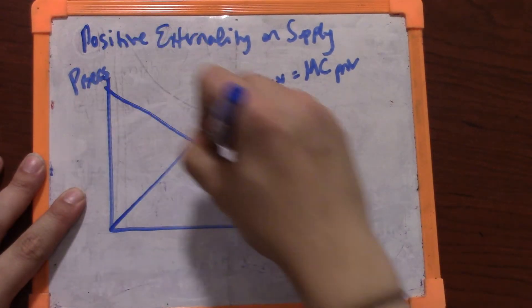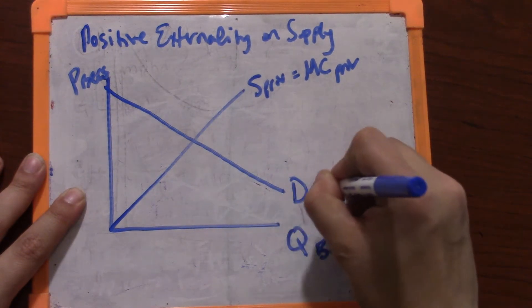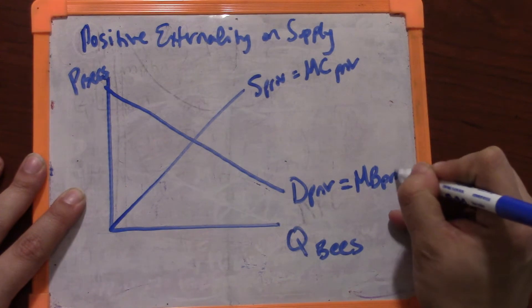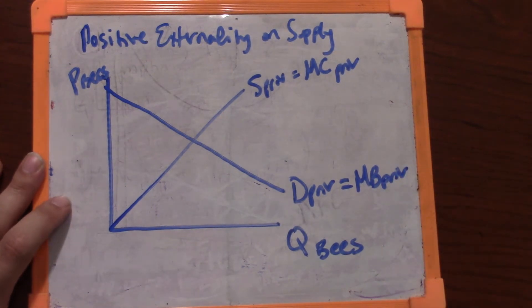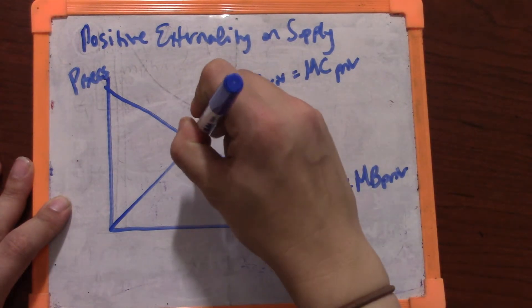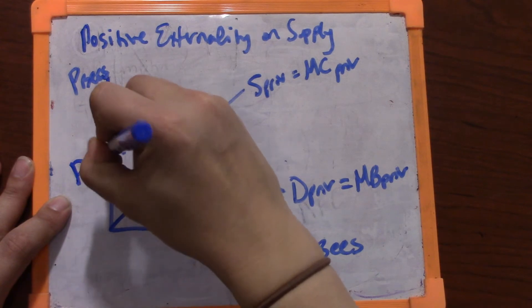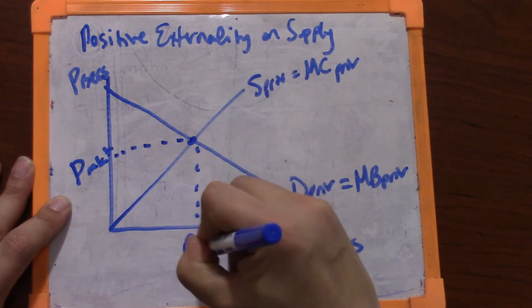Those are borne by the person supplying the bees. They are accounted for in the market. Then there is a market or private demand for bees, which is given by the marginal benefits to private individuals. So whoever is buying the bees in this market will have a demand curve that comes from their private marginal benefit, probably related to the amount of honey the bees produce, what they think they can sell the bees for in the future. And together the market supply and demand determine the market price and the market quantity.